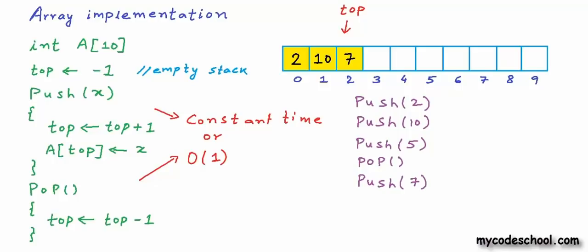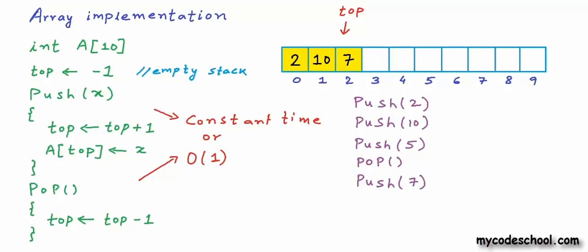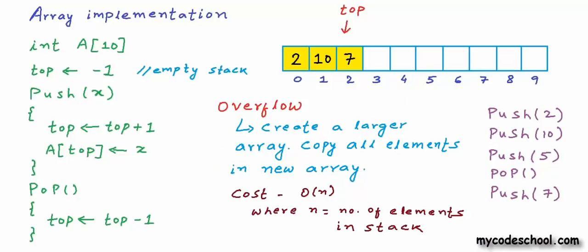There are a couple of things we can do in case of overflow. The push function can check whether the array is exhausted and throw an error — push will not succeed. Alternatively, we can use the concept of a dynamic array. In case of overflow we create a new larger array, copy the contents of the stack from the filled-up array into the new array, and if possible delete the smaller array. The cost of copying will be O(n) — proportional to the number of elements in the stack.